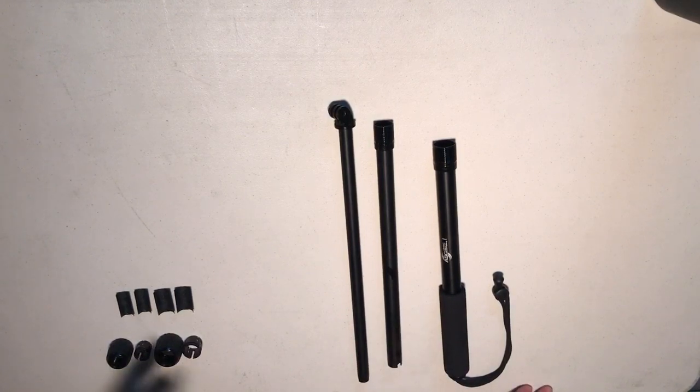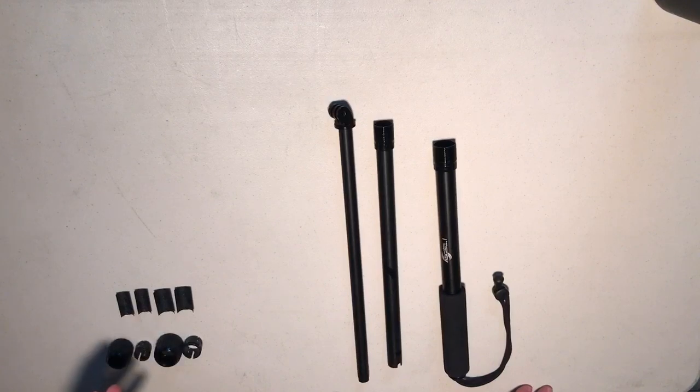Over here, we have two sets of tabs, one large and one small. These keep the sections from extending too far and rotating freely.